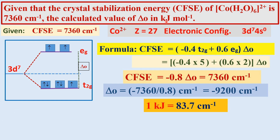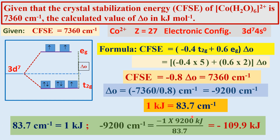The problem asks for Δ₀ in kilojoule per mole. The unit conversion is: 83.7 cm⁻¹ = 1 kilojoule. Therefore, 9200 cm⁻¹ ÷ 83.7 = 109.9 kilojoule per mole. So Δ₀ = -109.9 kJ/mol.